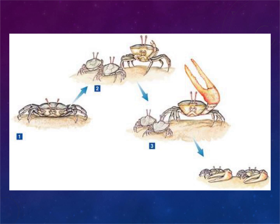Lamarckian evolution falls apart because Lamarck thought those changes could be passed on to offspring. If the crab built up a big front claw, its babies would be born with the bigger claw automatically. By that logic, if you got a tattoo and had a child, the child would have the same tattoo in the same spot; if you lost a finger, your child would be born without that finger. That does not hold true — those acquired traits cannot be passed down to children.